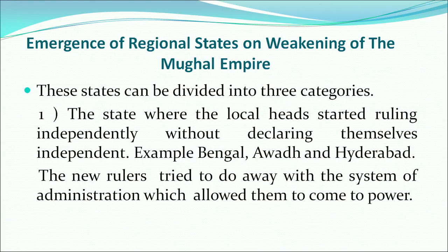Till now we studied regional states that emerged after the breakup of the Sultanate. Now we focus on regional states that emerged after the weakening of the Mughal Empire. Three kinds of regional states emerged. The most common type was where local heads started ruling independently without formally declaring themselves independent — for example, Bengal, Awadh, and Hyderabad. All three Nawabs declared themselves effectively independent without formally breaking from the centre. The new rulers tried to do away with the system of administration that had allowed them to come to power.